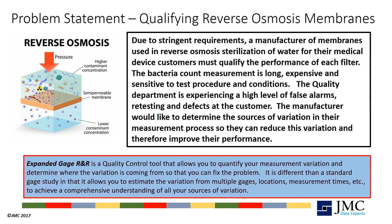Expanded gauge R&R is a quality control tool that quantifies your measurement variation and determines where the variation is coming from so that you can fix the problem.